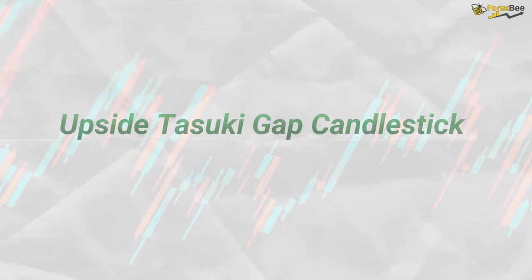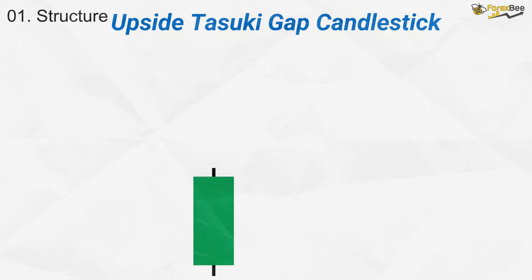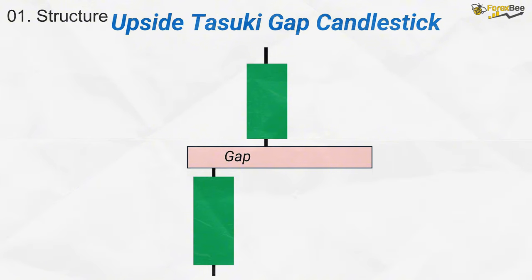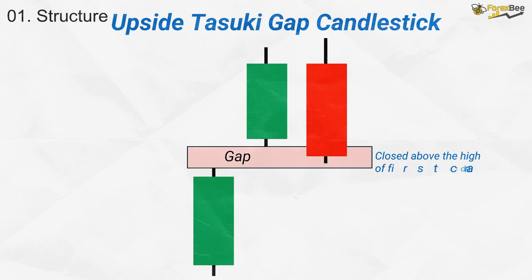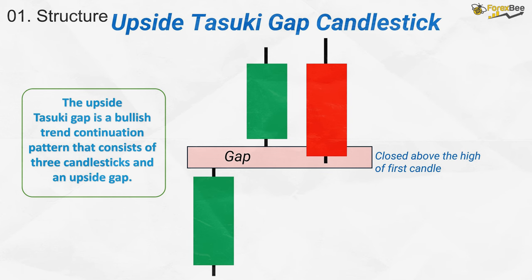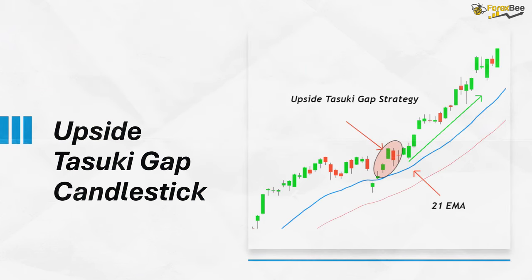Now, let's go over the upside Tasuki Gap candlestick pattern. The first candle is a strong bullish candlestick showing upward momentum. The second candle is also bullish and opens with a gap above the previous candle, indicating strong buying pressure. The third candle is a bearish candlestick that partially fills the gap created by the second candle, but does not close below the gap. This pattern forms in an ongoing bullish trend, acting as a continuation signal. In the example, the third bearish candle retraces slightly but fails to reverse the trend, confirming the strength of the uptrend as buyers regain control after the brief pullback.